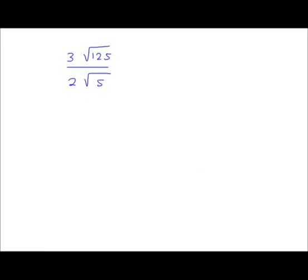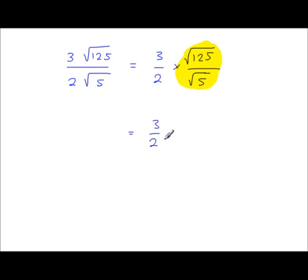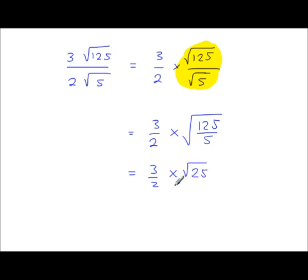In this example, we're dividing 3 root 125 by 2 root 5. We can rewrite this as (3/2) times (root 125 / root 5), which becomes (3/2) times root(125/5) = (3/2) times root 25 = (3/2) times 5. Multiplying a fraction by a whole number only multiplies the numerator, giving 15 over 2.